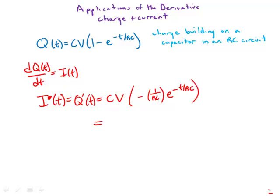Multiplying everything out, we get the two negative signs cancel. So we get CV/RC e^(-t/RC). The C's cancel. And we get V/R times e^(-t/RC).